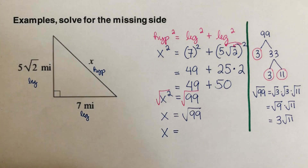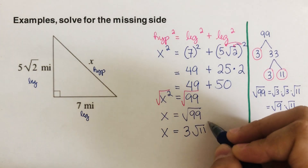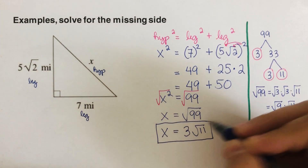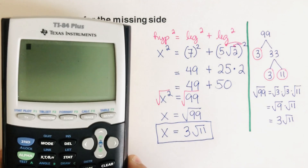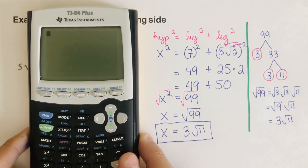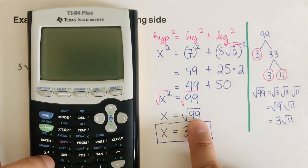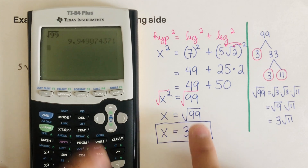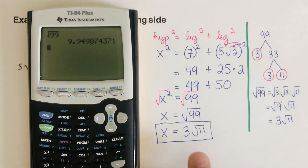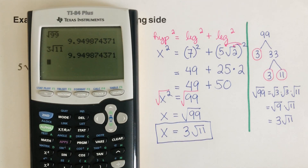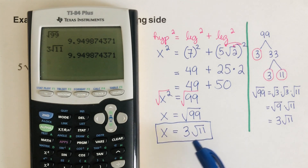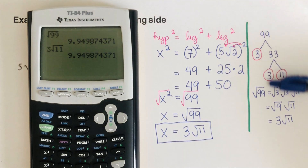We can check our answer on the calculator. The square root of 99 gives a decimal value, and 3 square root of 11 gives the same decimal — they match. Remember to write your answer in radical form. There's a video on simplifying radicals; I encourage you to pause this video and try the next problem on your own before checking the answer.